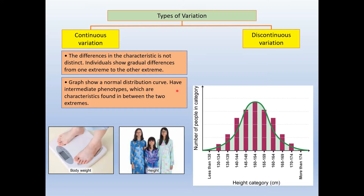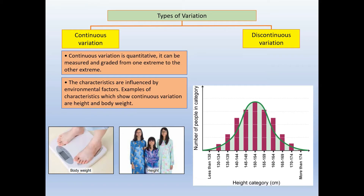Continuous variation has intermediate phenotypes, which are characteristics found in between the two extremes. This graph shows the height range on one axis and the number of people in each category on the other. Continuous variation is quantitative — it can be measured and graded from one extreme to the other, for example body weight and height. The characteristics are also influenced by environmental factors, such as diet and physical activity.